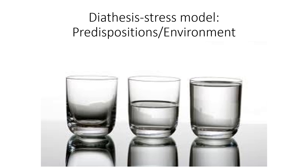I said I'd come back to glasses and water — let's look at the diathesis stress model. The diathesis stress model looks at how genes and environment interact to produce outcomes. You have genetic predispositions and environmental factors. Think of glasses of water where these glasses represent traits: if the glass overflows, a person expresses that trait. Let's say we're talking about depression — if the water overflows the glass, that person becomes depressed.